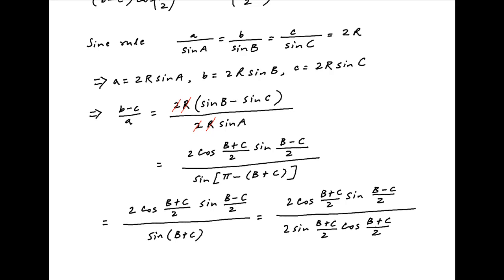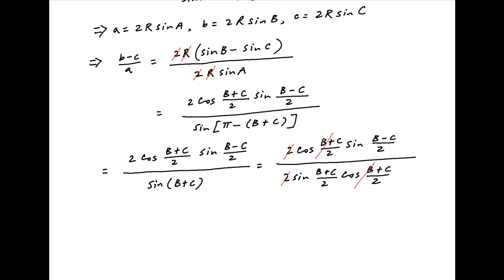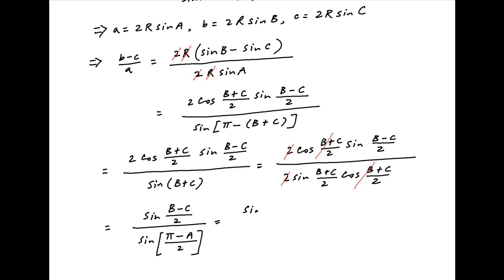Now cos((B + C)/2) cancels across the numerator and denominator, giving (b - c)/a = sin((B - C)/2) divided by sin((B + C)/2). We then replace B + C with π - A, so the denominator becomes sin(π/2 - A/2), which equals cos(A/2).